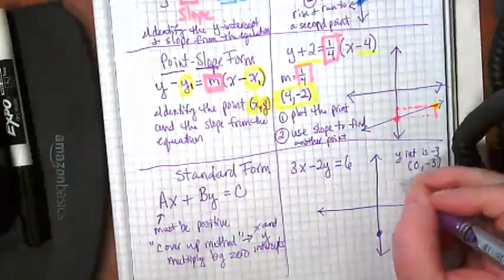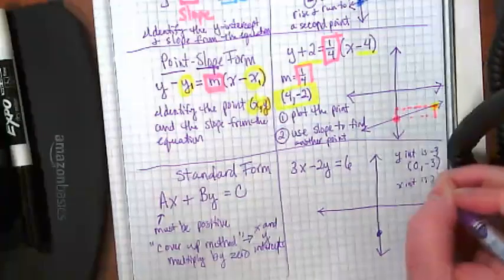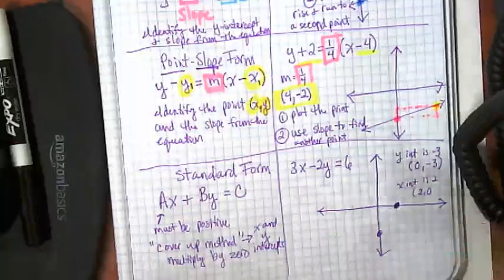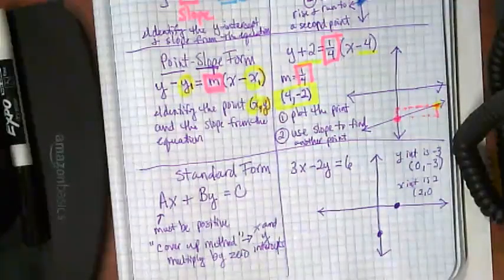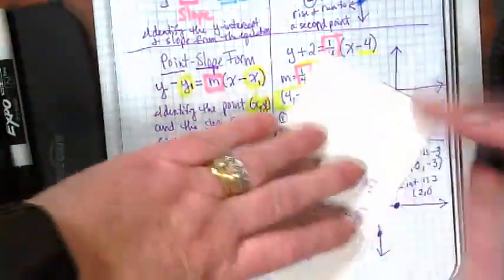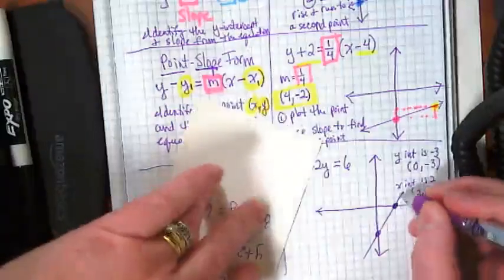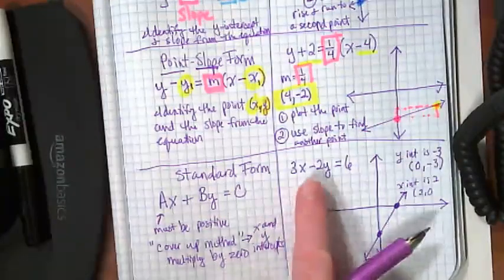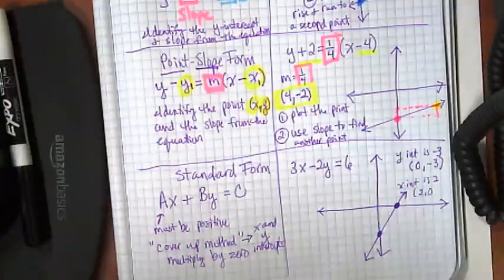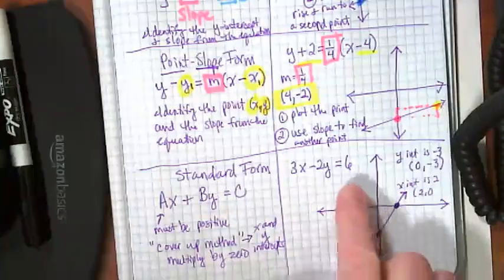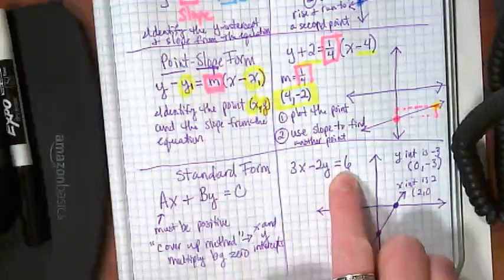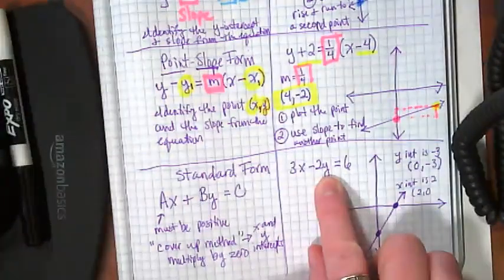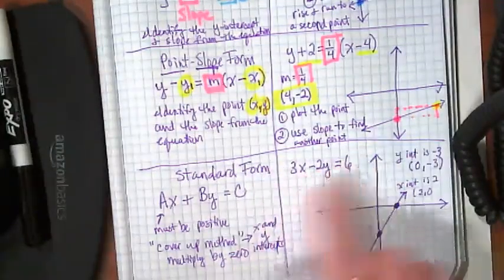So here's my X intercept right here. Can I draw the line? If this number was 17, it wouldn't work. Because 17 divided by three would not be a nice pretty number. And 17 divided by two would not be a nice easy number. So it really is a great equation if these numbers all work well together. Does that make sense?